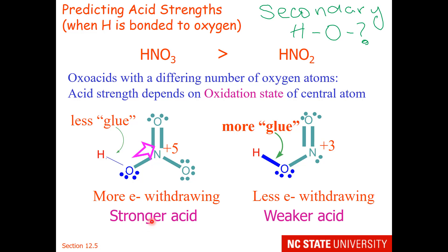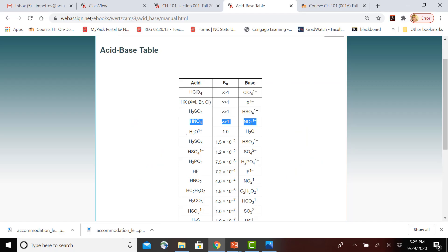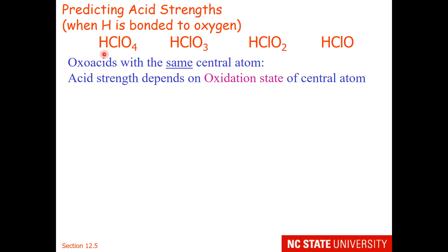Nitrous acid has more glue, so remember: the stronger acid has the weaker bond, and having a high oxidation state weakens that bond. We can verify this on the acid-base chart — nitric acid is very high up to the left, making it a strong acid, while nitrous acid is a little further down and therefore a weaker acid.